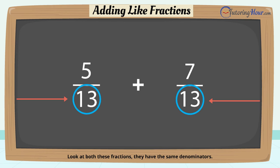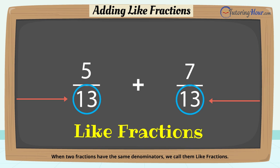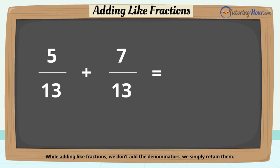They have the same denominators. When two fractions have the same denominators, we call them like fractions. While adding like fractions, we don't add the denominators. We simply retain them. We only add the top numbers and write the sum over the common denominator.